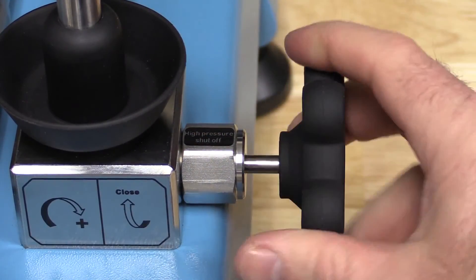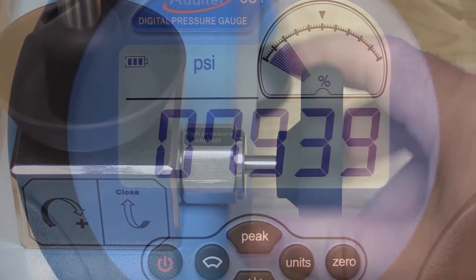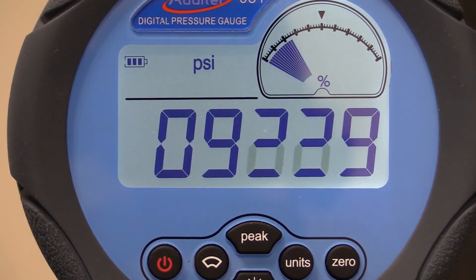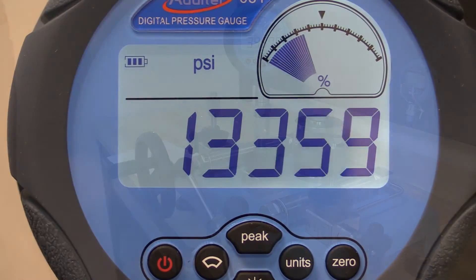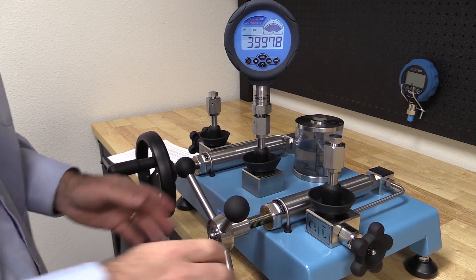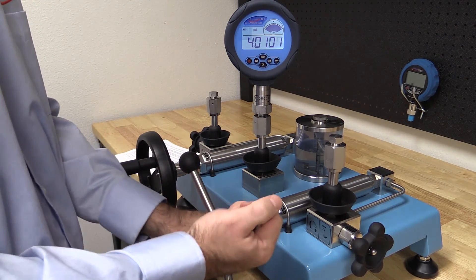Then I'll close the pre-pressure shutoff valve. Now I can generate the remaining pressure with the high pressure screw press. To dial into a cardinal point, the high pressure screw press can also be used as a fine adjustment.